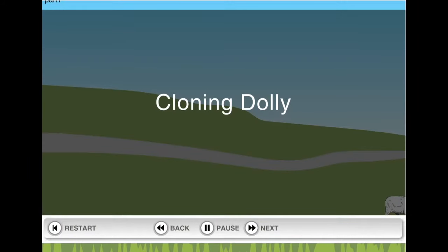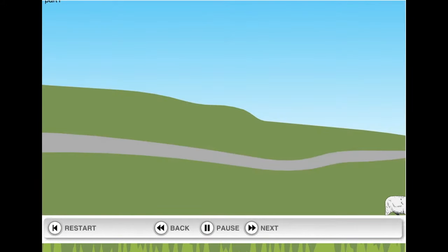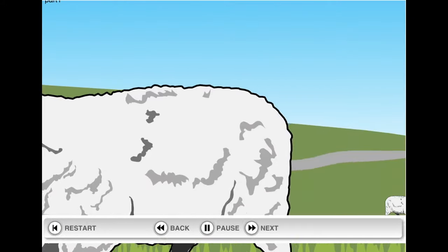This animation outlines the process the Roslin Institute scientists followed to create Dolly, the world's first mammal to be cloned from cells taken from an adult Dorset ewe.